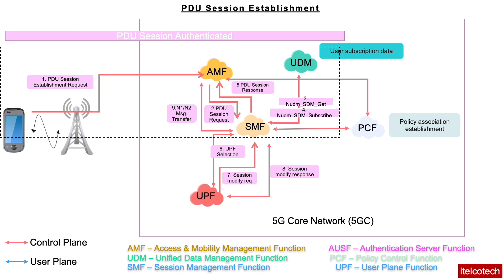In step 9, the SMF communicates back to the AMF. The information received from the UPF — including the QoS profile, the slicing allowed for this PDU session, and the QFI to be selected depending on the QoS — all these details are conveyed at this particular stage.